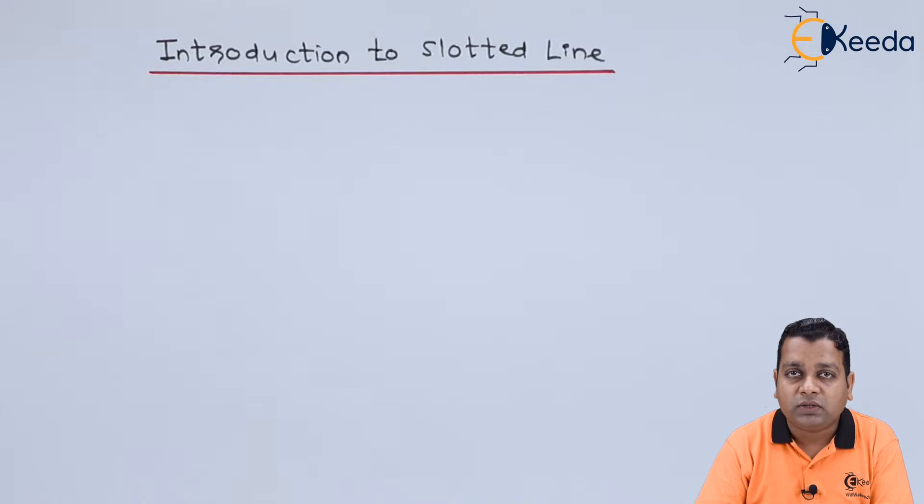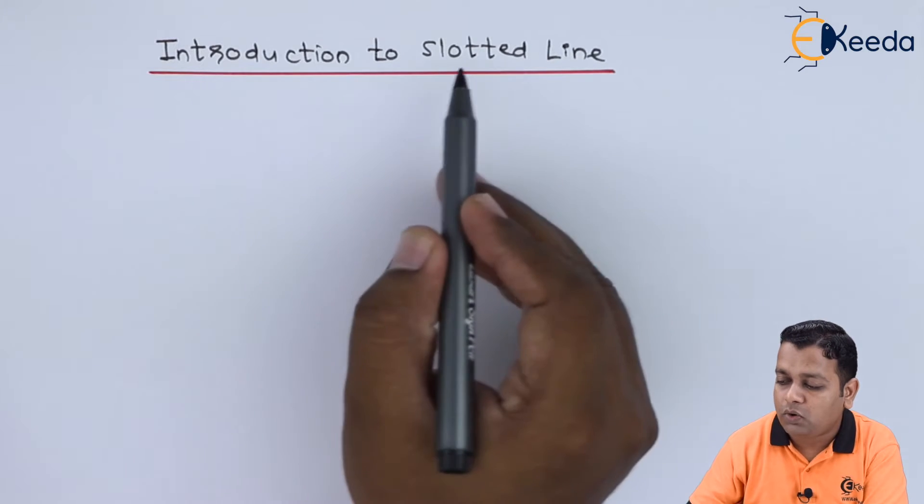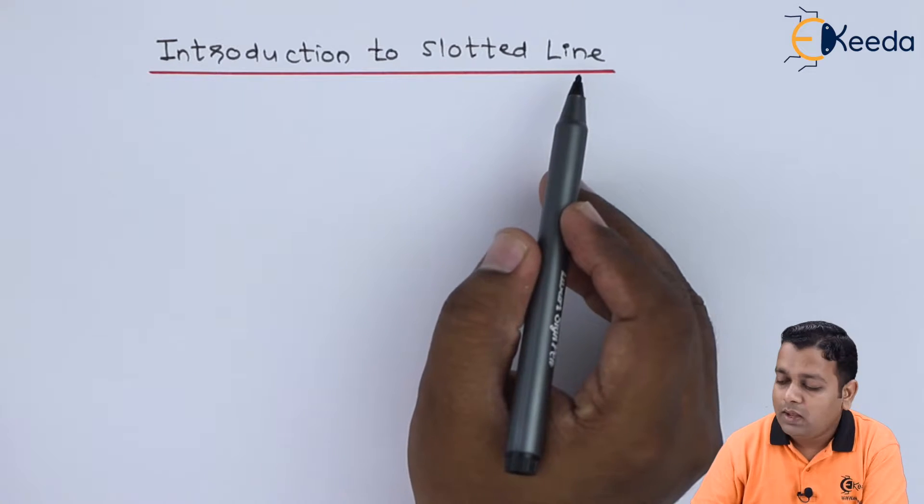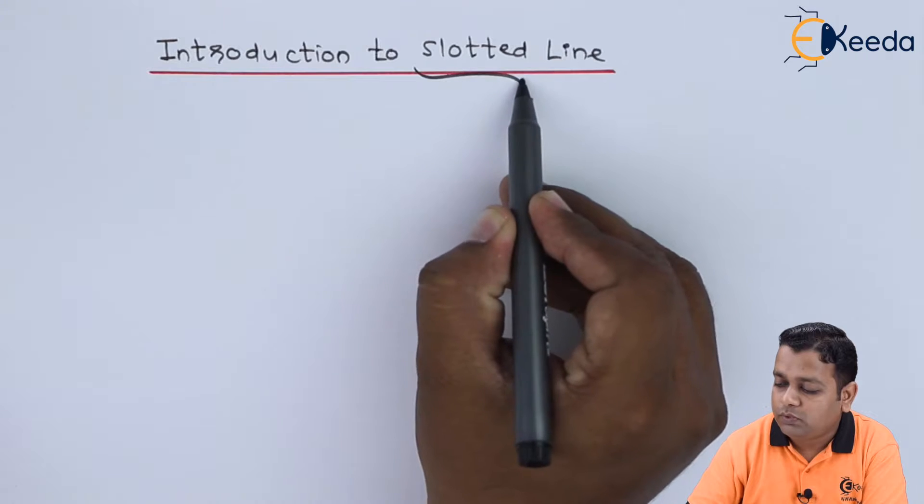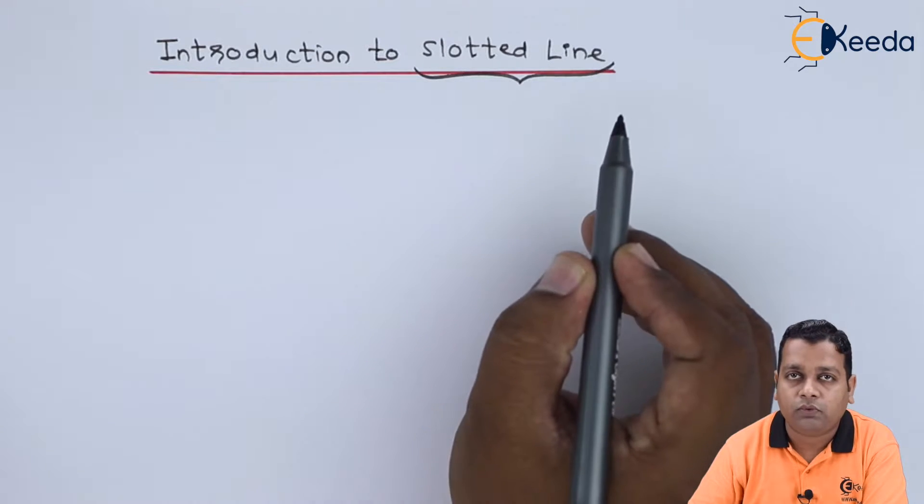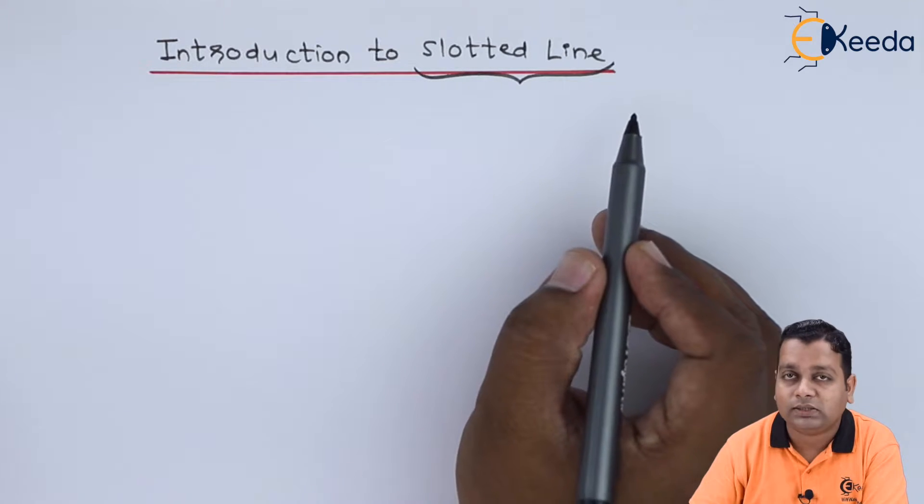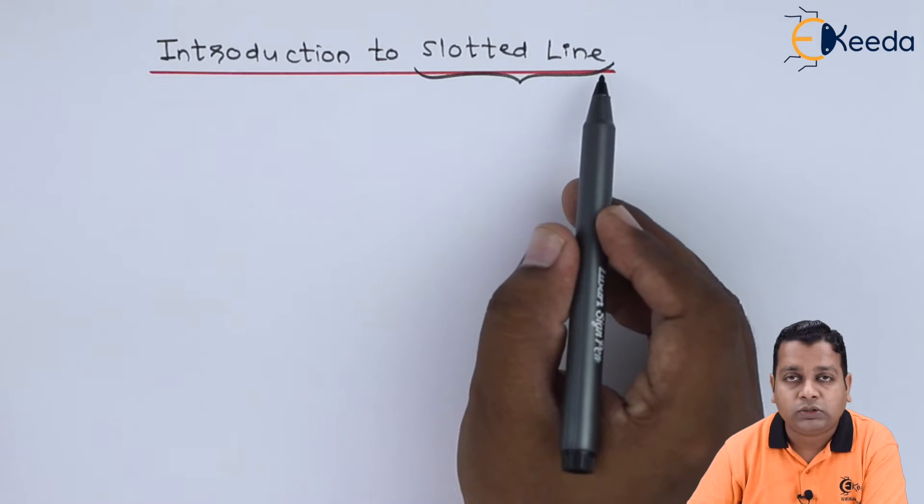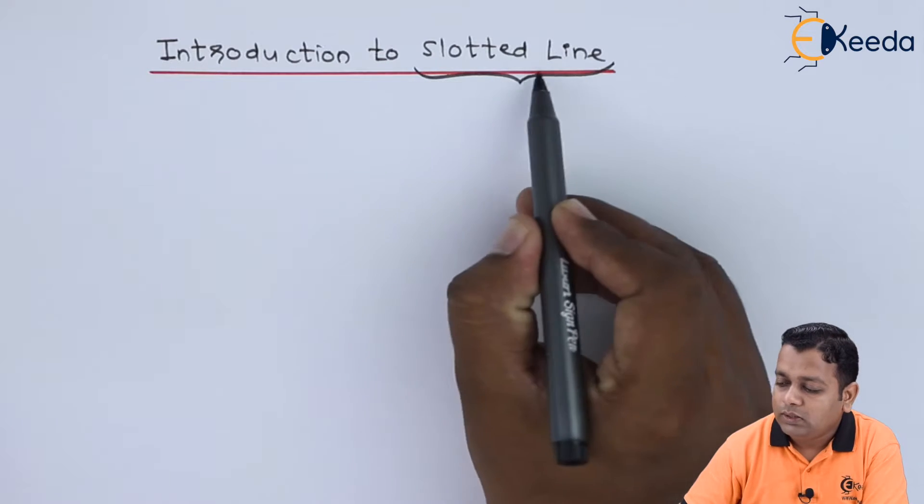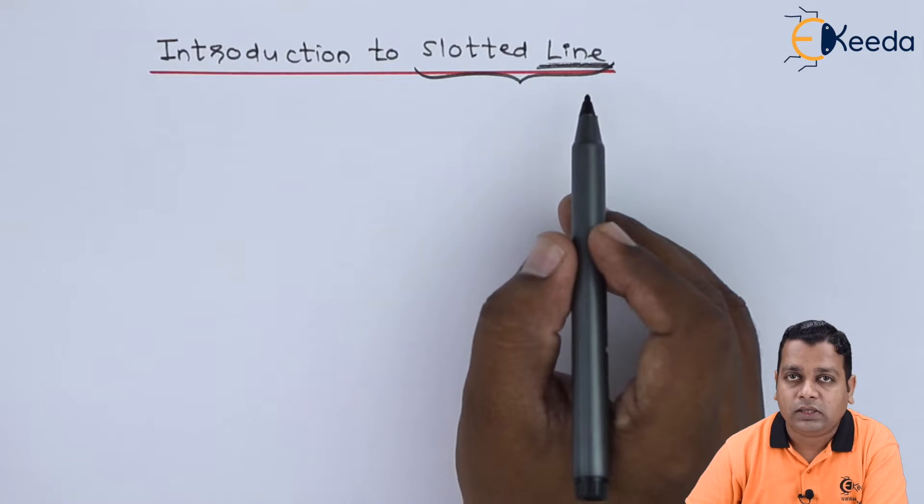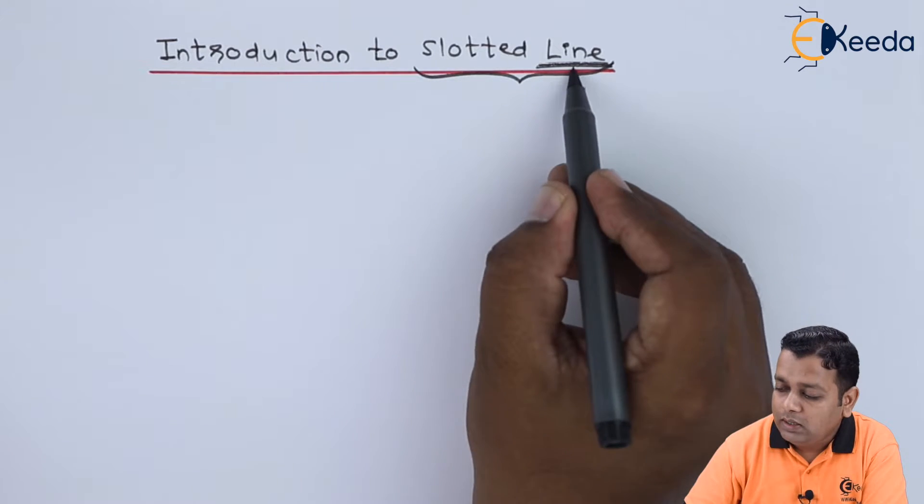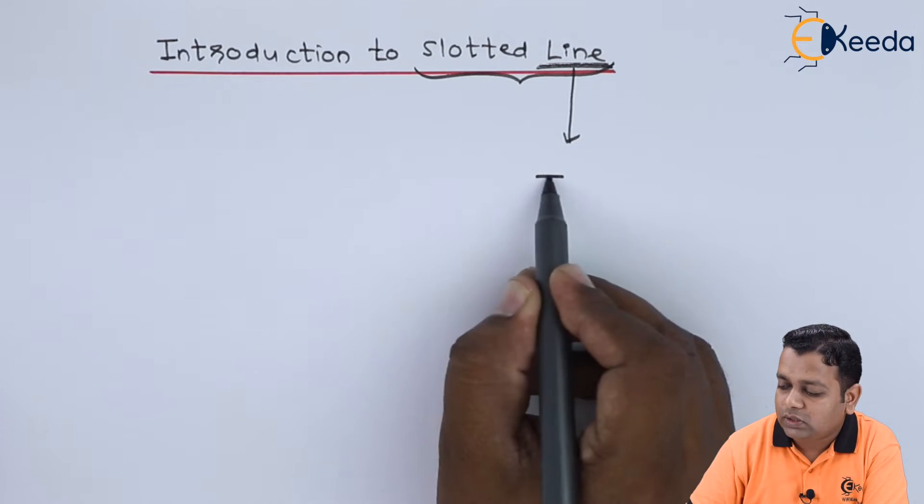So here we start with our topic titled Introduction to Slotted Line. As the name of this particular microwave component or microwave device suggests, the second term at the end is giving us information that it is nothing but a transmission line.